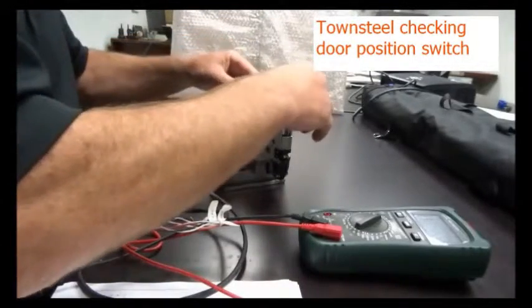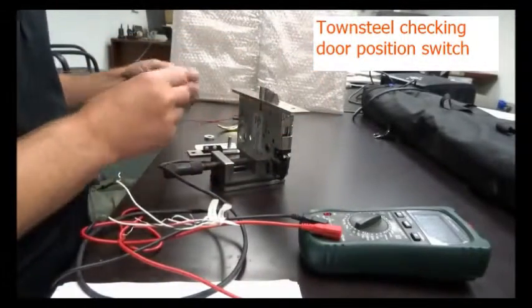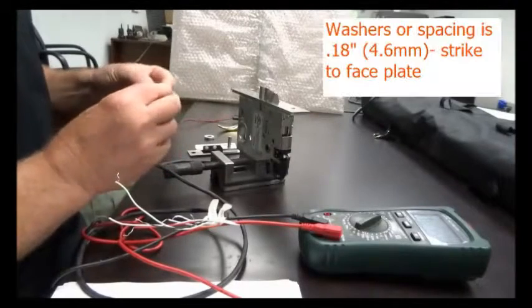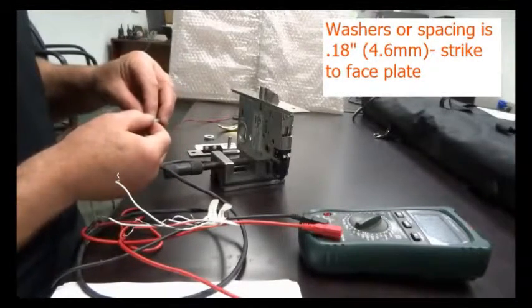In this position, I put a faceplate on there. I have washers that are approximately a little over 0.18 inches thick.